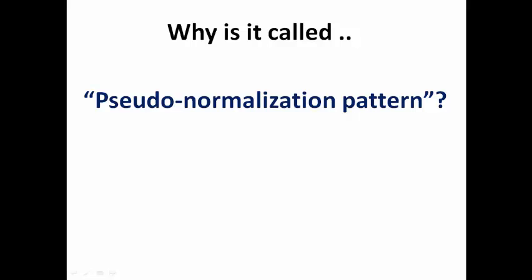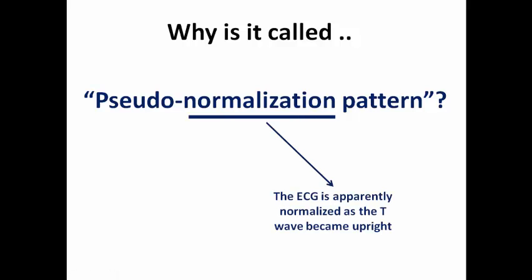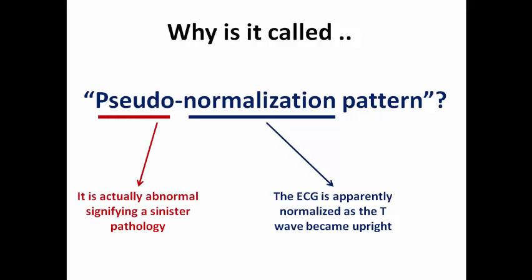So why is it called pseudonormalization? Normalization because the ECG is apparently normalized — the T wave was inverted and it became positive, so it became normal. But pseudo because it is not normal. It is abnormal and signifies a sinister pathology, because here we suspect that the patient is having acute myocardial ischemia superimposed on chronic myocardial ischemia leading to the positive T wave. That's why it's called pseudonormalization.